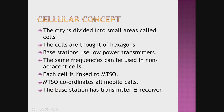What is this cellular concept and why is the mobile phone called a cell phone? Mobile telecommunication uses a cellular concept for communication. The whole city is divided into small areas called cells. The cells are thought of as hexagons, and each cell has a base station, which is a low power transmitter. The same frequencies can be used in non-adjacent cells but cannot be used in neighboring cells. Each base station is linked to MTSO — the Mobile Telephone Switching Office — which coordinates all mobile calls. The base station has both a transmitter and a receiver.